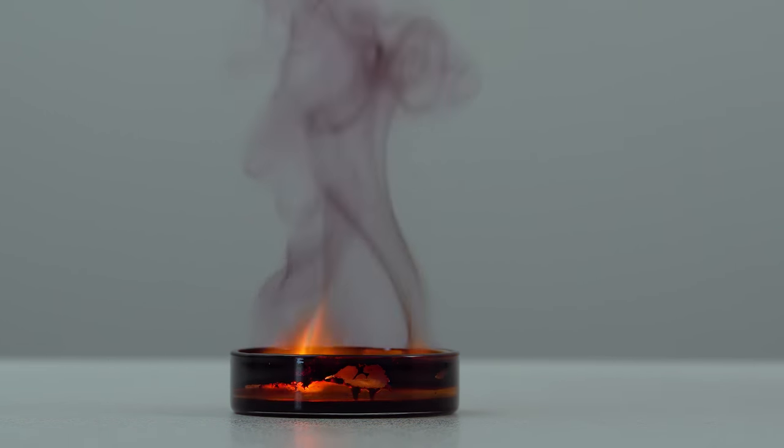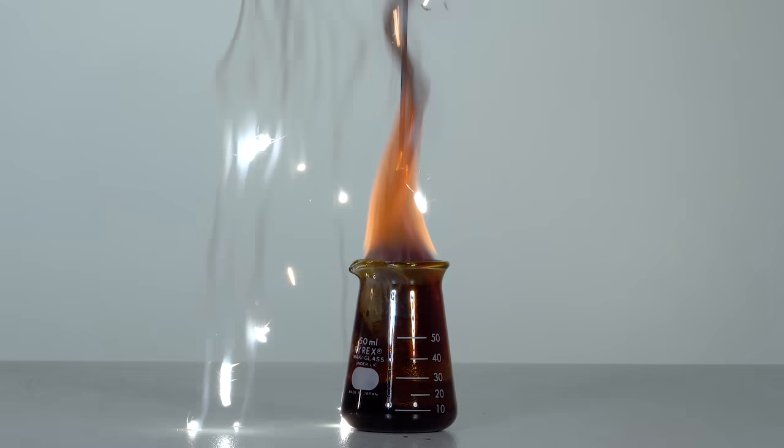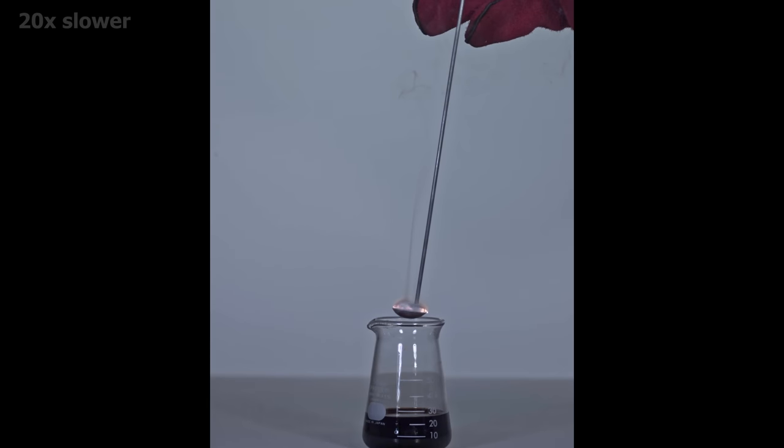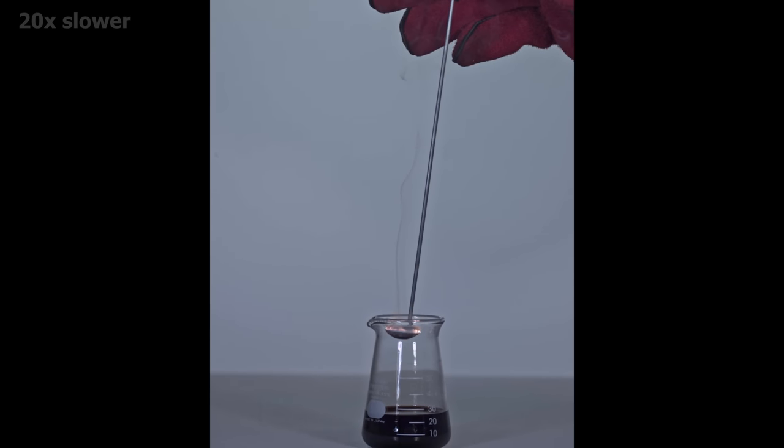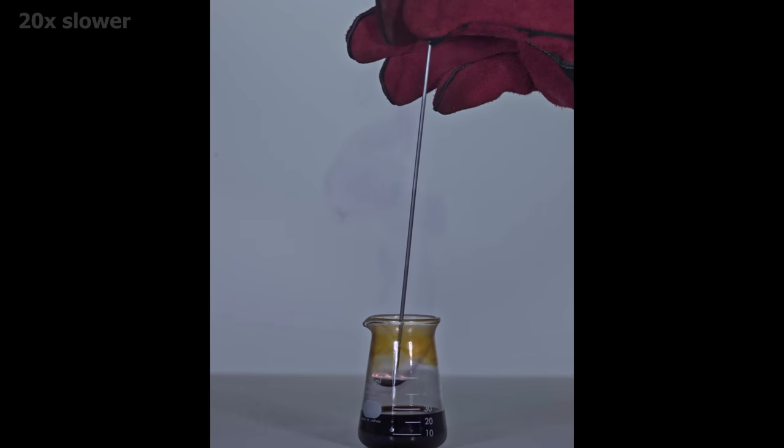I wonder how much iodine it will emit if I drop it in burning magnesium. Allyl iodide is quite volatile and we can see the emission of iodine vapors before burning metal comes in contact with the liquid.